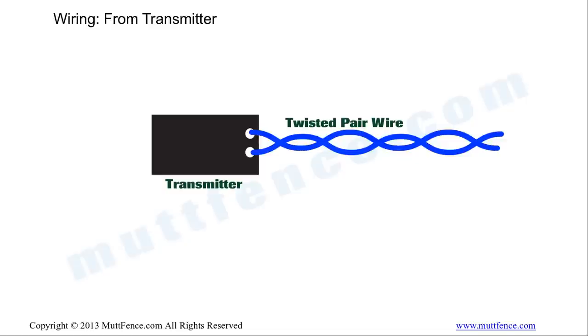The effect of this is that they carry the signal from A to B, in this case from the transmitter to the signal boundary, but they do not transmit that signal to your dog's collar. This means that your dog can cross that blue line. So twisted pair is very useful to carry the fence signal but not broadcast it to your dog's collar.